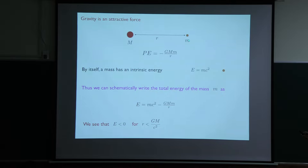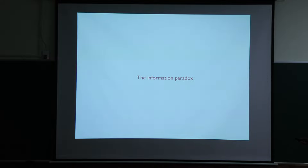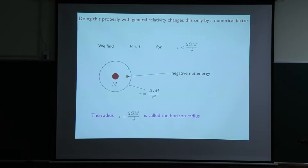If you find the total energy of this mass m when it is kept near the mass capital M — in this heuristic Newtonian approximation — I would write mc squared for the intrinsic energy, but then the energy is lowered a bit because of the potential energy. If you look at this expression, as you make r smaller this term becomes more negative, and at some point the whole thing turns negative. If r is less than GM over c squared, then the total energy of this particle at that distance is actually negative.